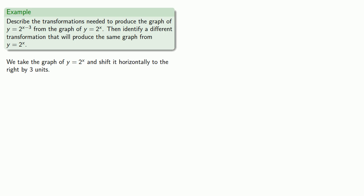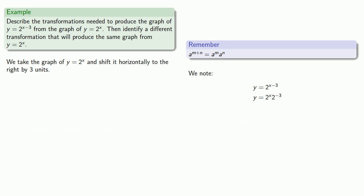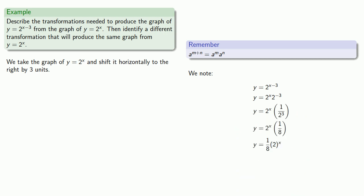Now what happens if we apply our rules of exponents? We note that y equals 2 to the power x minus 3. Using the product rule for exponential expressions, 2 to the power x minus 3 is the same as 2 to the x times 2 to the power minus 3, which simplifies to y equals one-eighth times 2 to the power x. So we could also take the graph of y equals 2 to the power x and apply a vertical stretch by a factor of one-eighth.